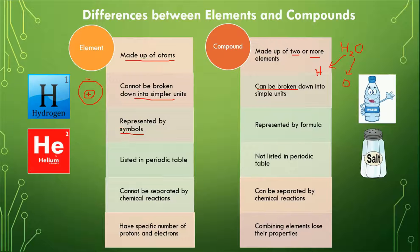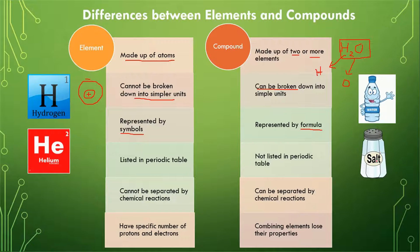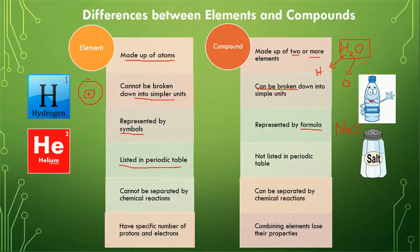To represent elements, we use symbols — for example, H for hydrogen, He for helium, and O for oxygen. But to represent compounds, we use a formula. For example, H₂O is the formula for water, and NaCl is the formula for salt.